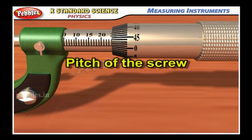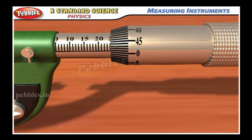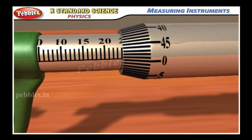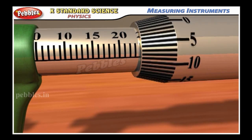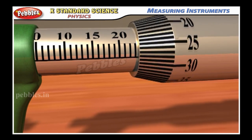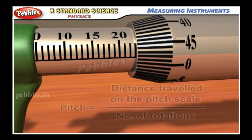Pitch of the screw is the distance between two screw threads. It is also equal to the distance traveled by the tip of the screw for one complete rotation of the head. Pitch is equal to